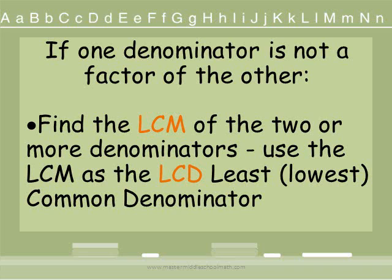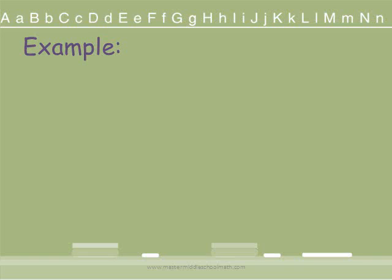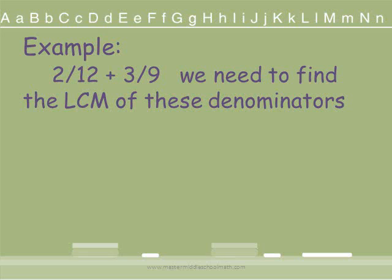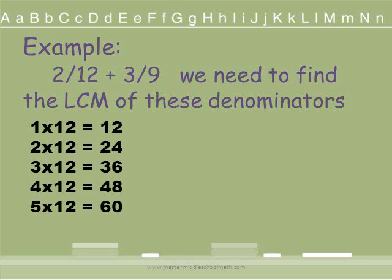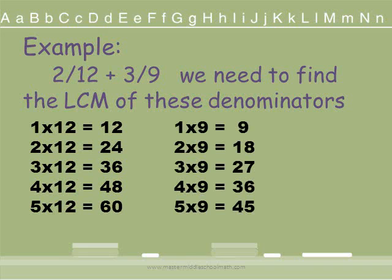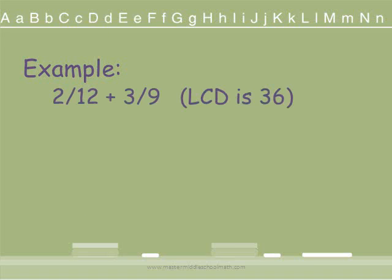If one denominator is not a factor of the other, you are going to have to find the least common multiple of the two denominators and use the LCM as the least common denominator. Here is an example: we have 2 twelfths and 3 ninths. We look at the multiples of 12: 12, 24, and so on. Then the multiples of 9: 9, 18, and so on. We ask ourselves, is there a number that both 12 and 9 go into evenly? Yes — 36 is the smallest number that both 12 and 9 will go into evenly. Our least common denominator is 36.